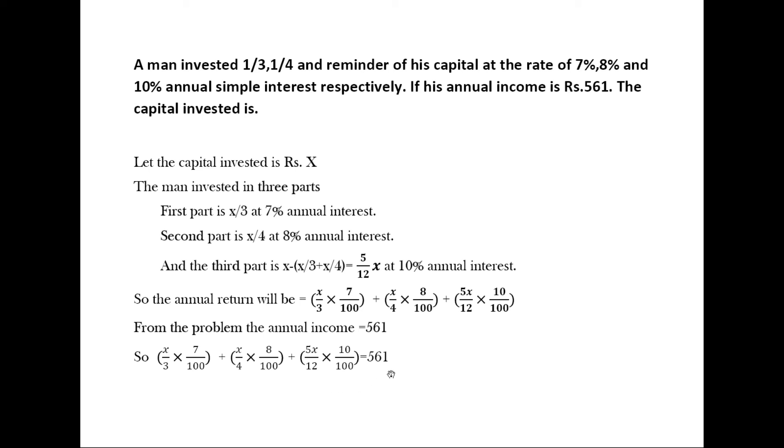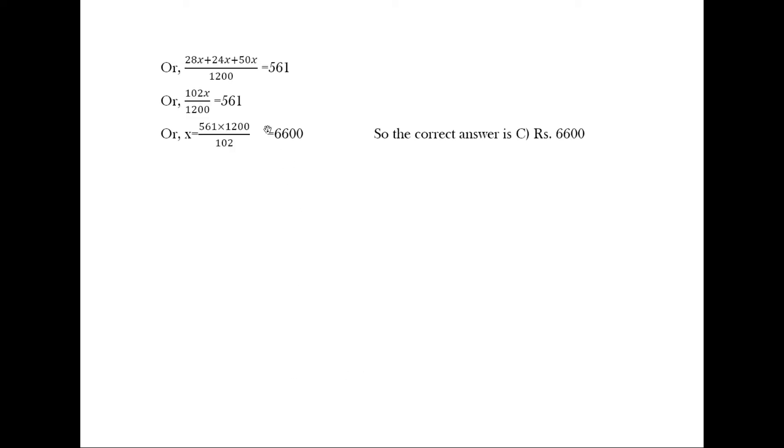If I add that, it will be 28X plus 24X plus 50X by 1200 equals 561, or 102X by 1200 equals 561. By simplification...